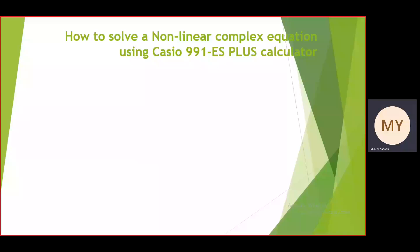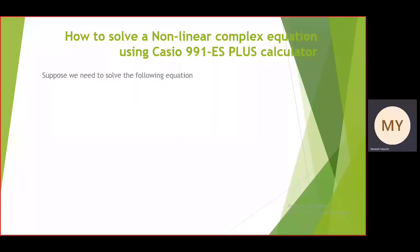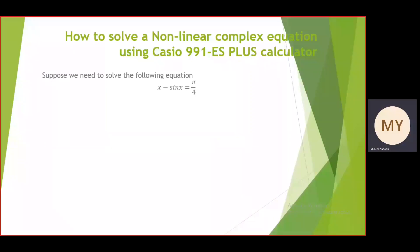Hi dear students, today we will learn how to solve a nonlinear complex equation using your 991 ES plus calculator. Suppose that we need to solve the following equation: x minus sin(x) equals pi by 4. This is a complex nonlinear equation.